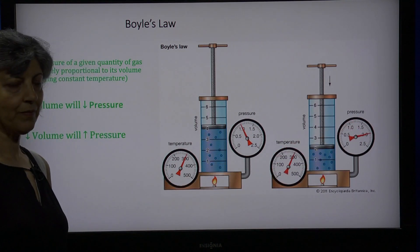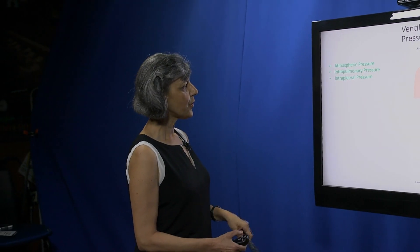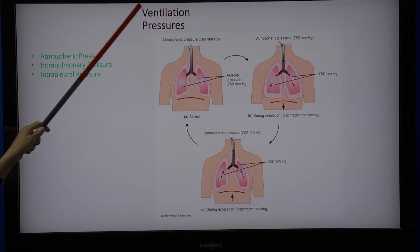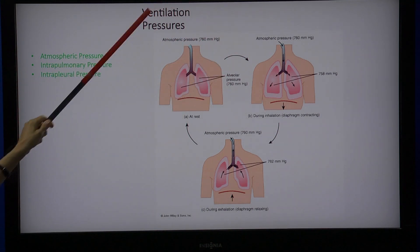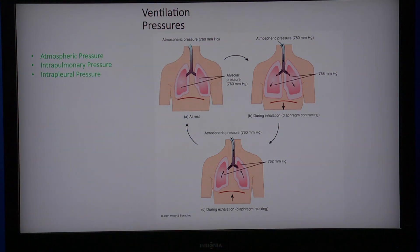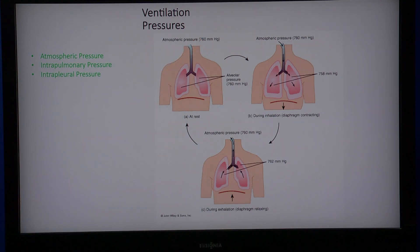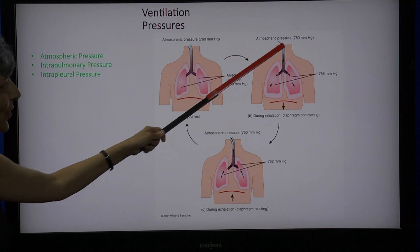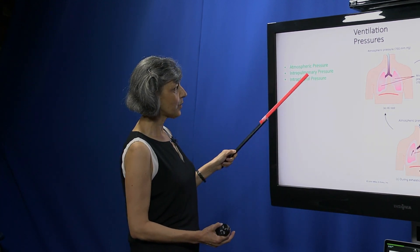Now we are going to apply Boyle's Law to ventilation. We're going to look at two pressures that affect ventilation. The first is atmospheric pressure — the pressure of the atmosphere surrounding us from which we take in air. This atmospheric pressure has a known value of 760 mmHg at sea level, and this does not change unless we change our location.